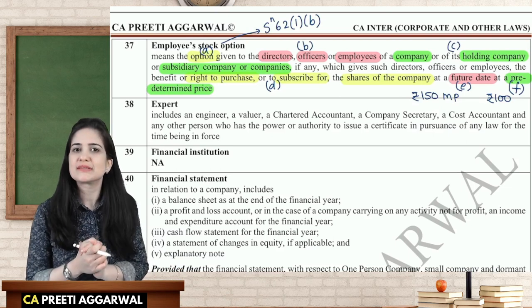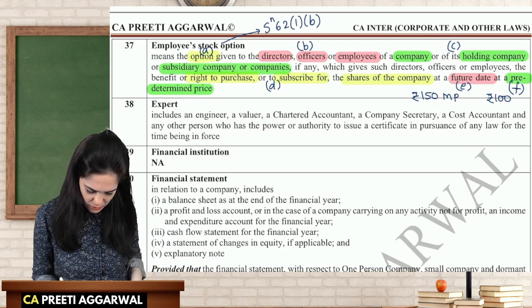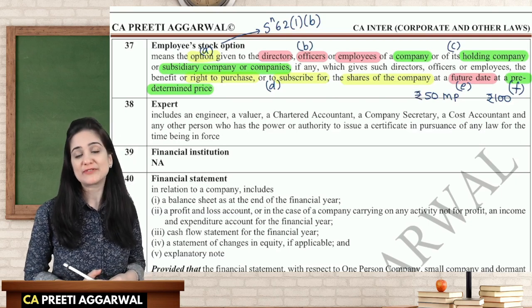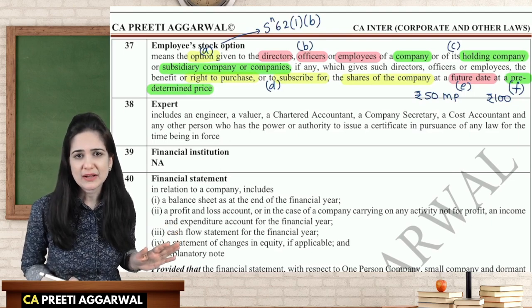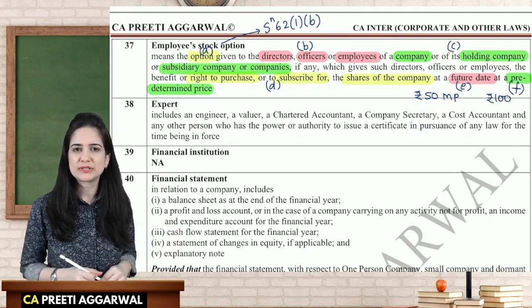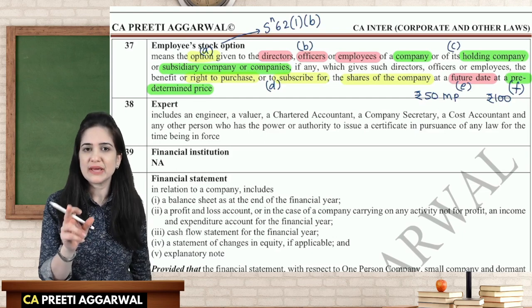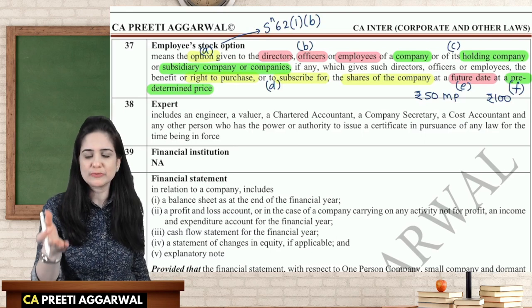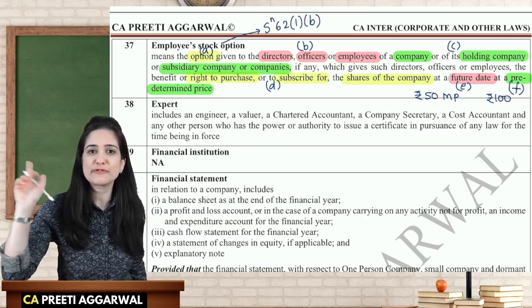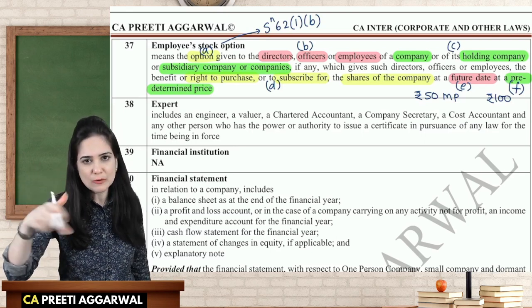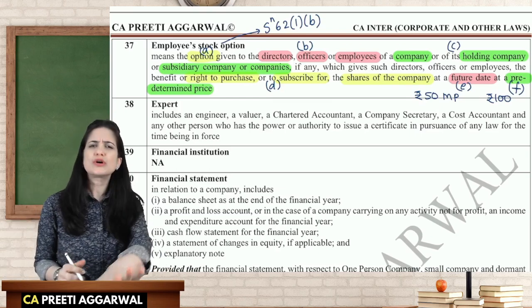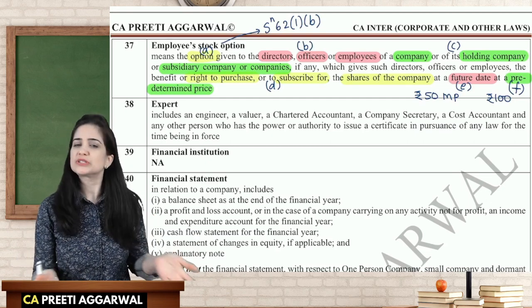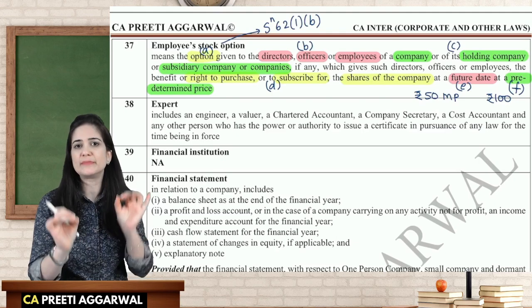But what if the market price reduces to 50 rupees per share? Then you will not exercise this option. It makes more sense to buy from the market itself at 50 rupees, whereas the option requires you to pay 100 rupees — that is 'out of the money.' So it is not compulsory; it is just an option given to employees, officers, and directors to purchase or subscribe to shares at a predetermined price.